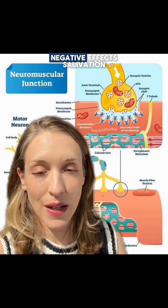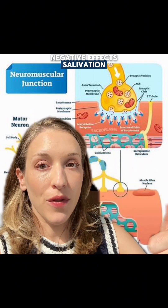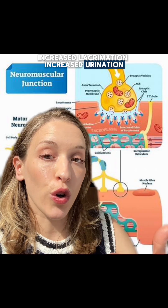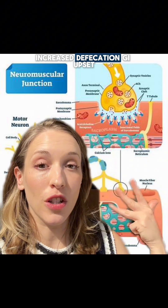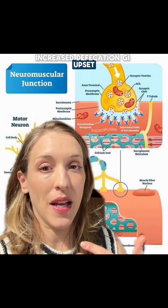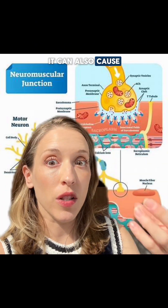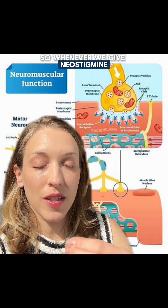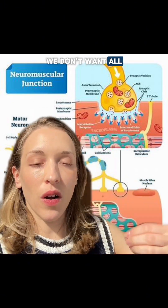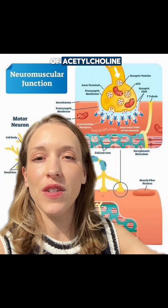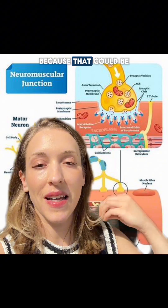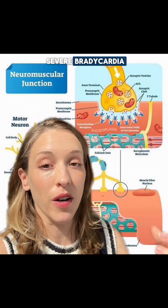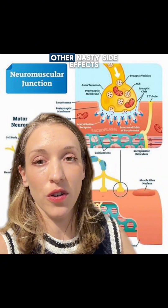Acetylcholine also has other negative muscarinic effects: salivation, increased lacrimation, increased urination, increased defecation, GI upset, emesis, vomiting, and miosis — pupillary constriction. Whenever we give neostigmine, we don't want all of this uninhibited acetylcholine activity, because that could be very dangerous — causing severe bradycardia plus all of these other nasty side effects.